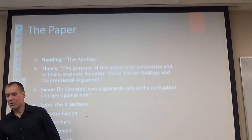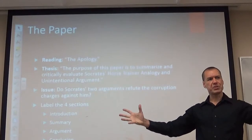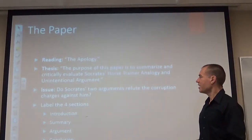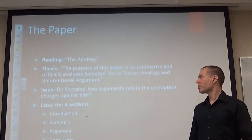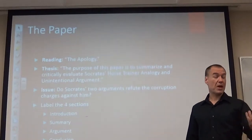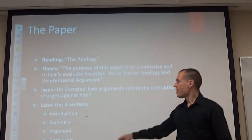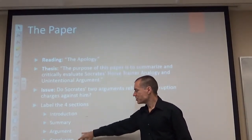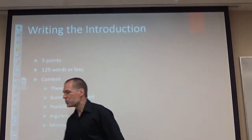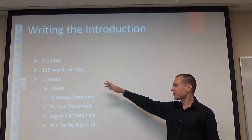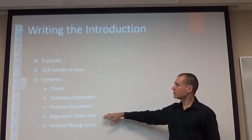Quick run through the paper we talked about last time. One critical thing: the paper is not about the whole Apology or everything Plato and Socrates did. It's just that particular part where Socrates is accused of being a corrupter of the youth, he replies to those in charge, and then modifies the charge with his horse trainer analogy and unintentional argument. Be sure to label the four sections: introduction, summary, argument, and conclusion. The introduction should be pretty short — five sentences or less. Hit your thesis, summary statement, position statement, argument statement, and background.